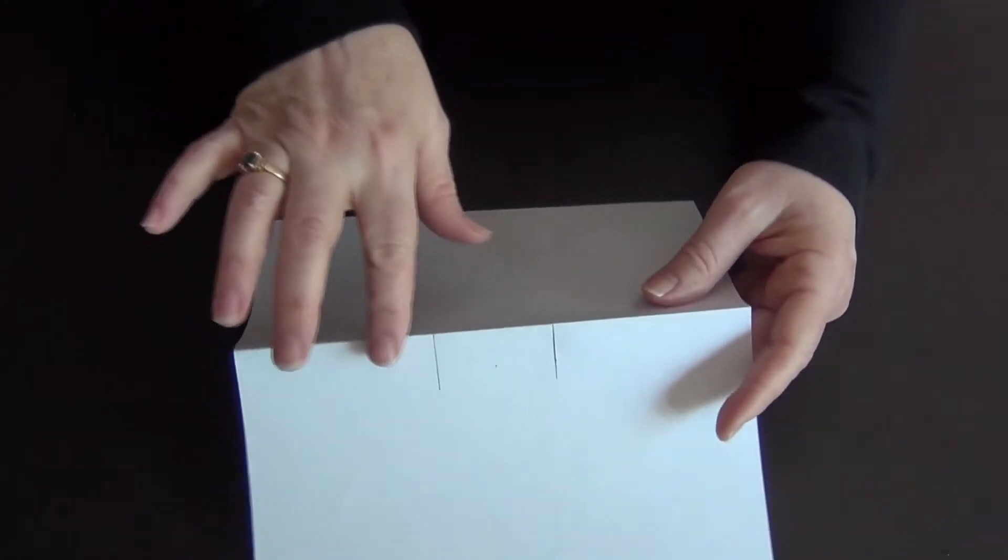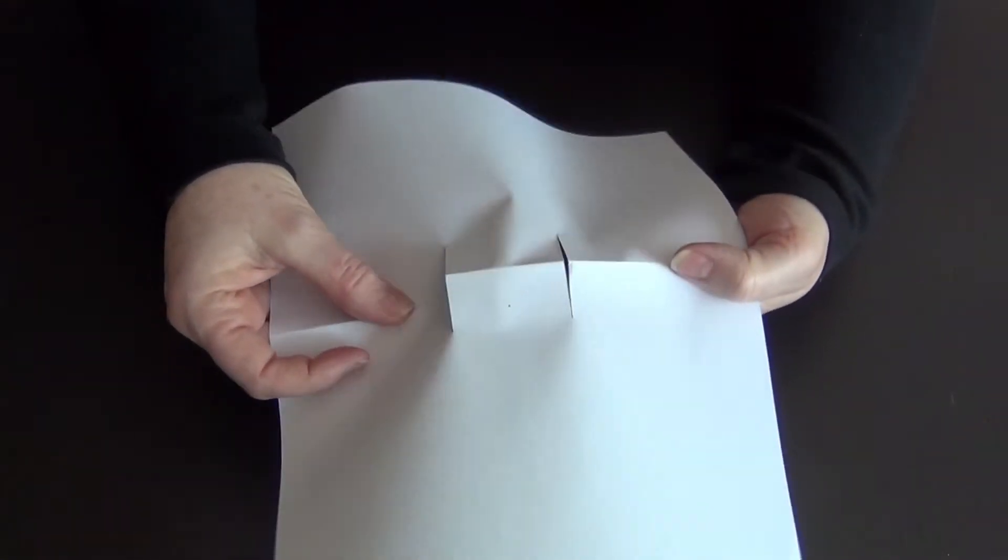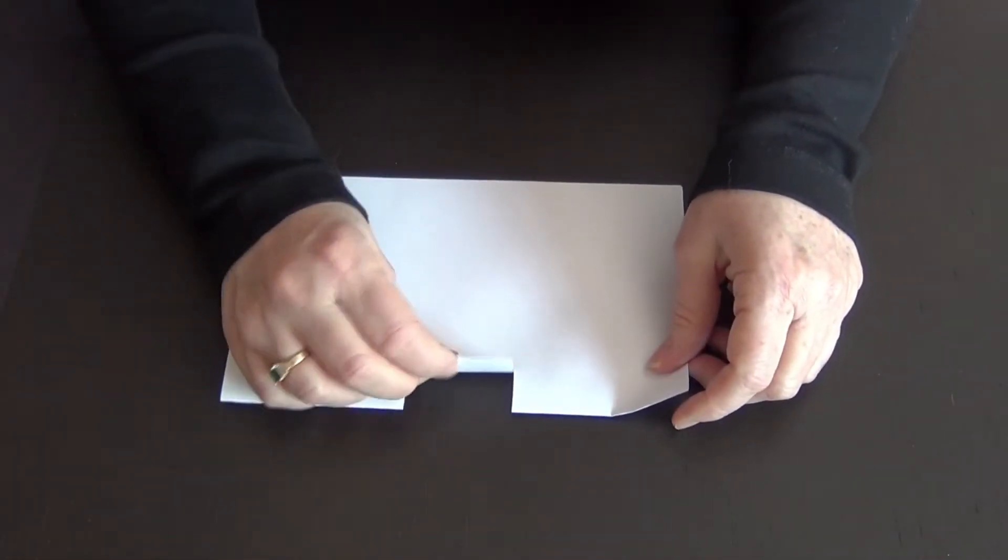And you notice we haven't done anything with the fold there. That's still intact. We've just made these cuts in the paper. Two cuts. All right. So now we've made it a little flat.